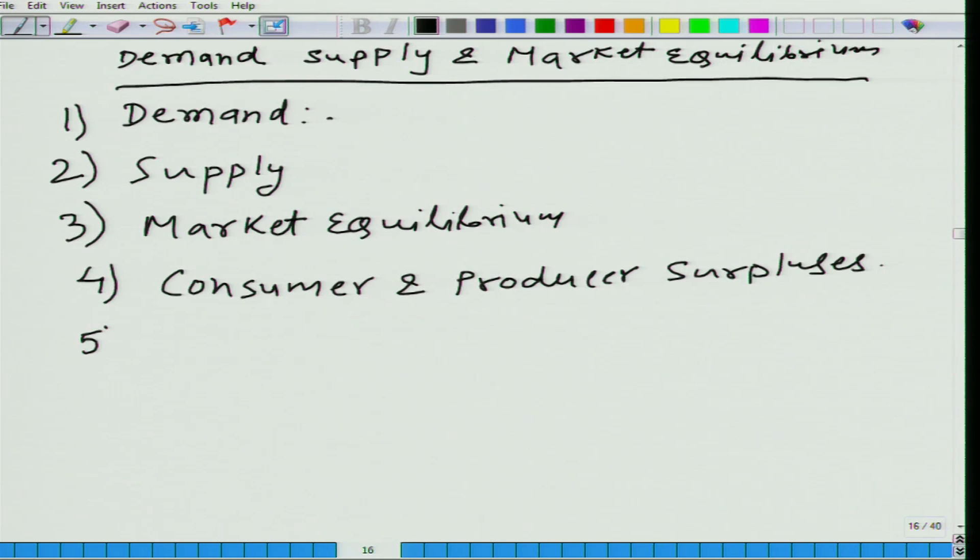The fifth topic that we are going to talk about is applications of the concepts of demand and supply, and we will pick two particular applications. The first is going to be effects of taxation, and the second application we are going to study is about price control. I already gave you an example of price control through the story of Diocletian, Let There Be Cheapness. Diocletian was trying to control the price. We will see the repercussions of an attempt at controlling the price through mechanisms other than those generated by the market.